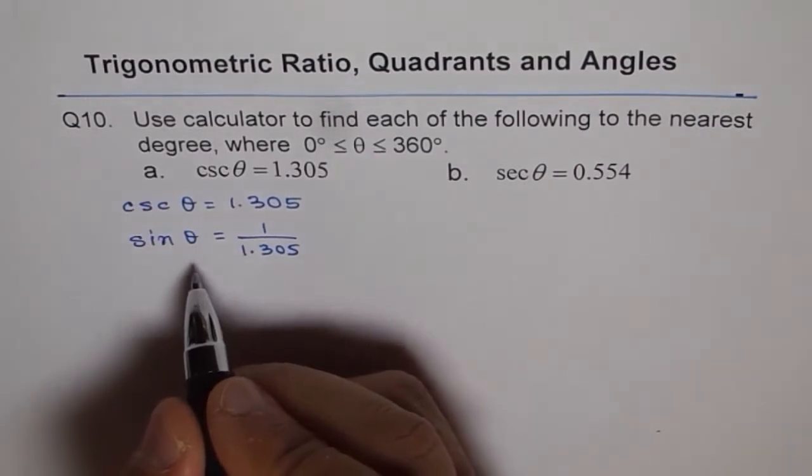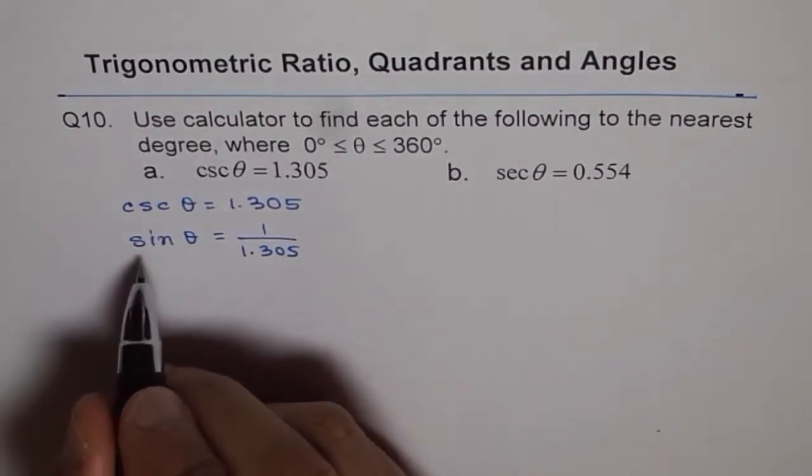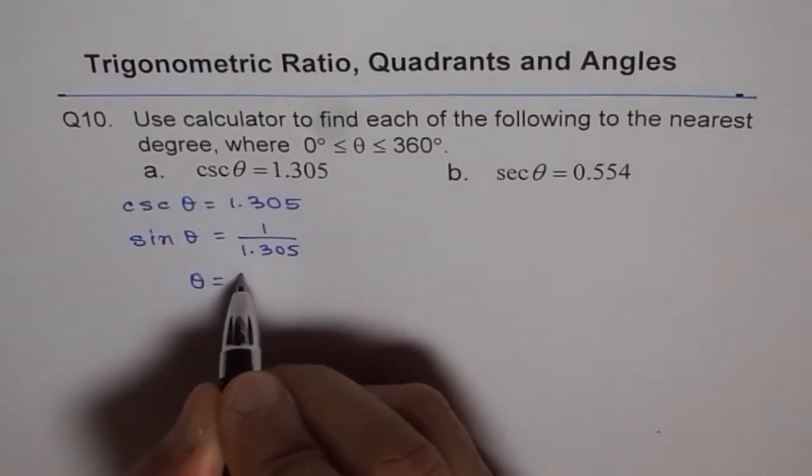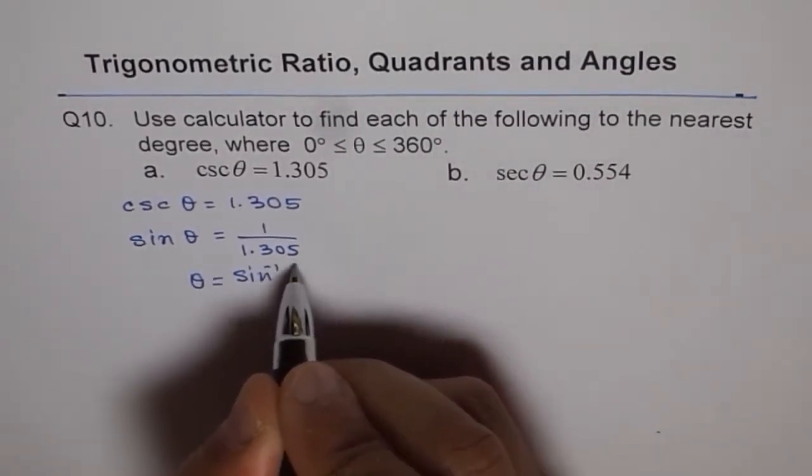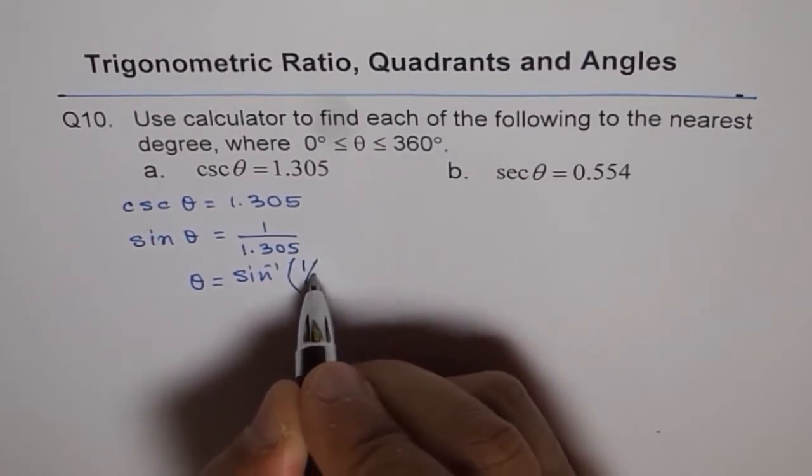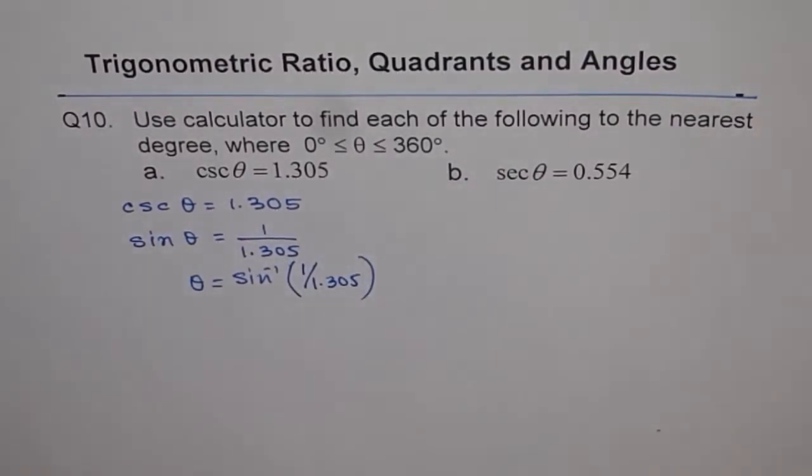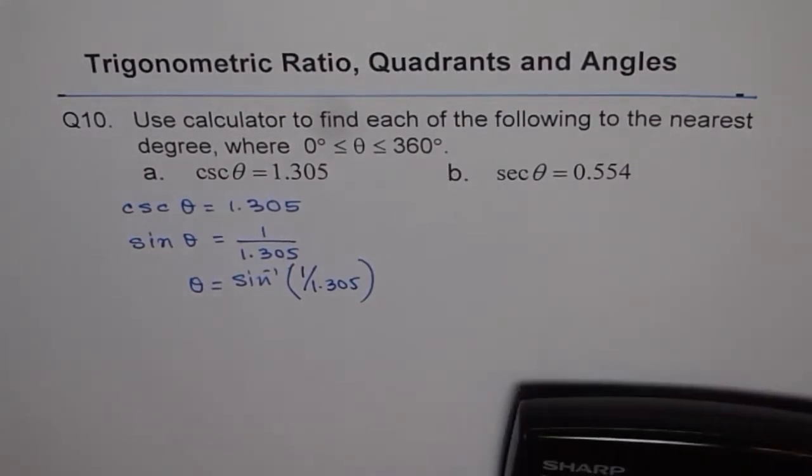Now, we can use the calculator because calculator does not have cosecant, it has sine. So we can say, now we can use the calculator and theta equals sine inverse of 1 divided by 1.305. So use your calculator and get the answer. So we get sine inverse, and don't forget to write brackets. Bracket open, 1 divided by 1.305, bracket close, equals to.